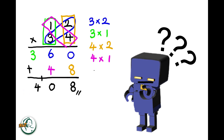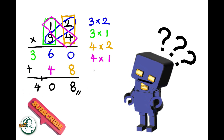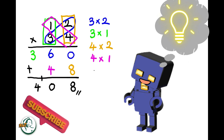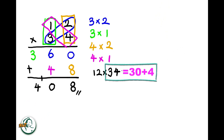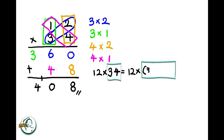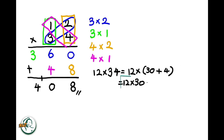Let's delve into the rationale behind this method. Consider 34 as 30 plus 4. Now, we can express 12 times 34 as 12 times (30 plus 4). This expands into 12 times 30, plus 12 times 4.